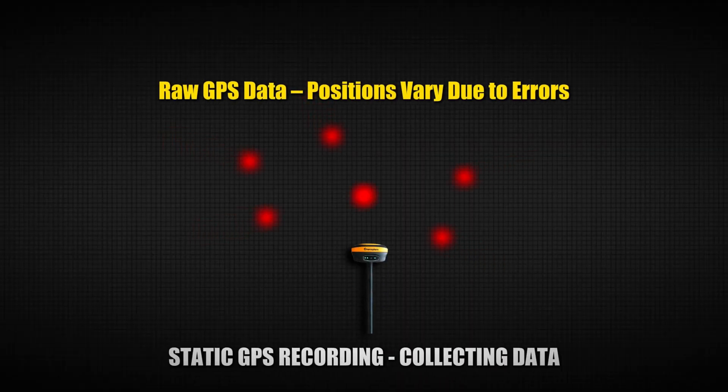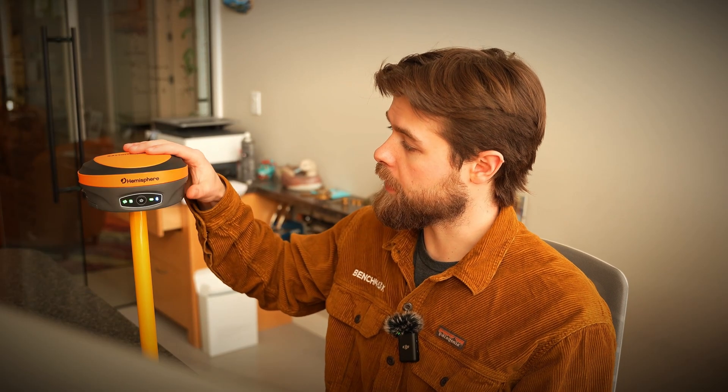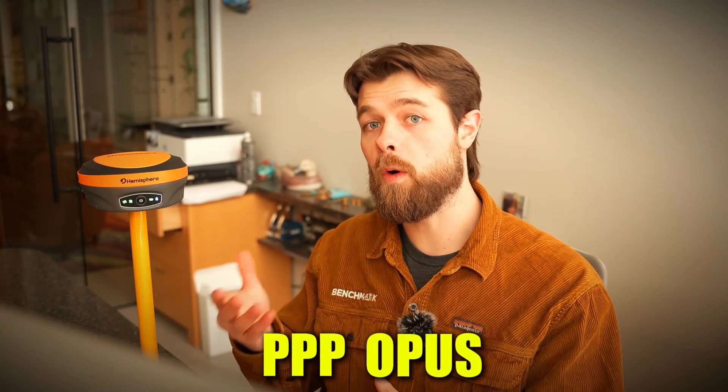So the first thing we should talk about is the concept of static. What static is, is taking a bunch of averaged positions from GPS satellites — the more satellites you have the better — with a base rover like this, over a long period of time. In today's video we took it at one-second intervals for four hours, and then with that average position we send it over to a governmental agency, either PPP or OPUS, to get that condensed into a very solidified position. Then we can use that positioning either in a local transformation, or to do a one-point localization for future work.